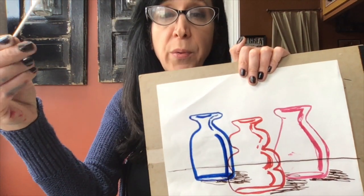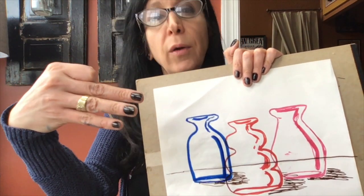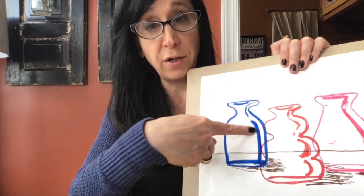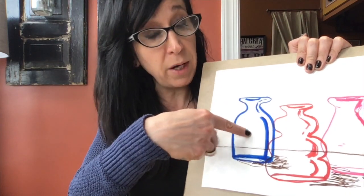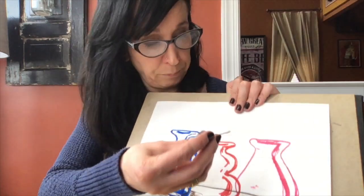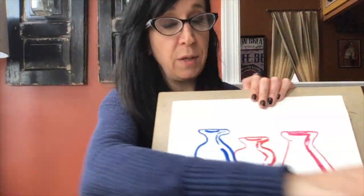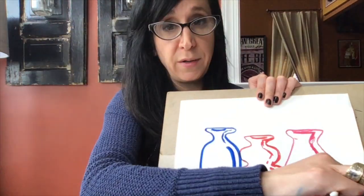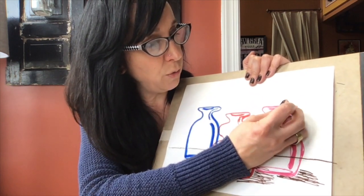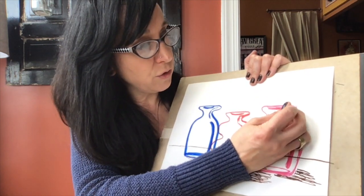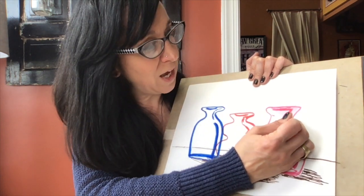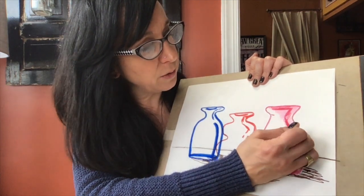Now we're going to create more of a variety between the dark of our color and the light of our paper — we're going to add more of a range of values. So I wet a Q-tip in a little bit of this water right here, and I want to follow the direction of the curve of the vase, just like when I was shading in that apple using my pencil earlier.